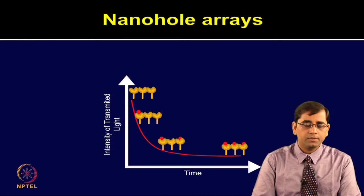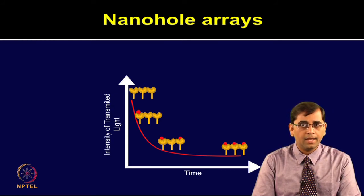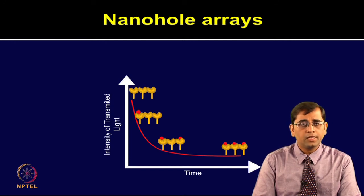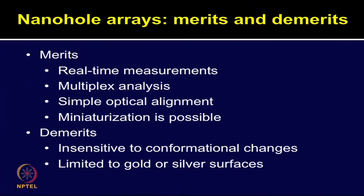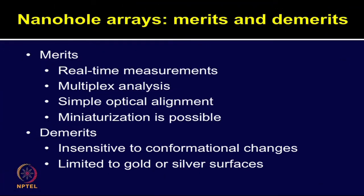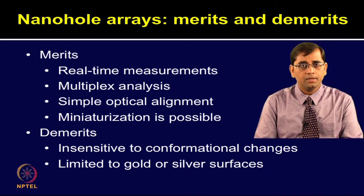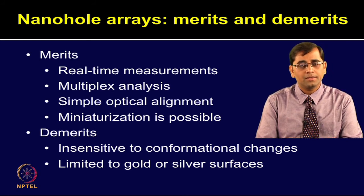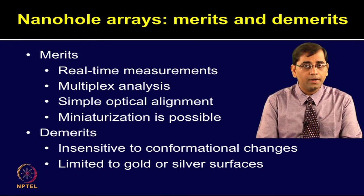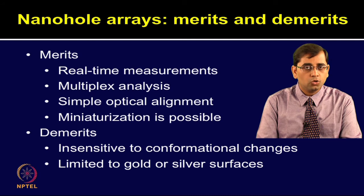This graph represents the intensity of transmitted light versus time scale. As analyte concentration increases on the nano-hole arrays, the transmission intensity decreases exponentially. Nano-hole arrays are promising for studying the binding kinetics of protein-protein interactions and are also compatible with microarray-based high throughput formats. The advantages of nano-hole arrays include real-time information with multiplexing capability. The optical alignment is very simple and miniaturization is very much possible. One can get rid of the bulky prisms required in the traditional SPR instrument, and the sensitivity is much higher in nano-hole arrays compared to traditional SPR.